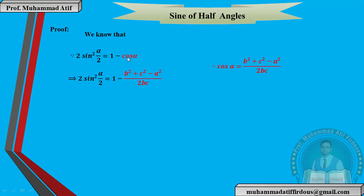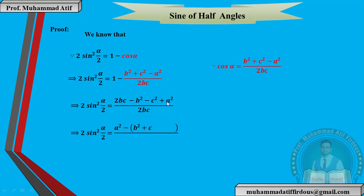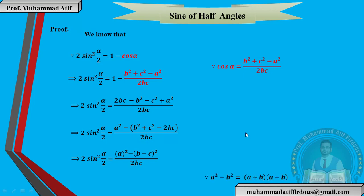Taking LCM on the right-hand side, we get a² remaining. We take negative common, and when two squares are involved, we use the difference of squares approach — adding and subtracting terms. We simplify this over 2bc.